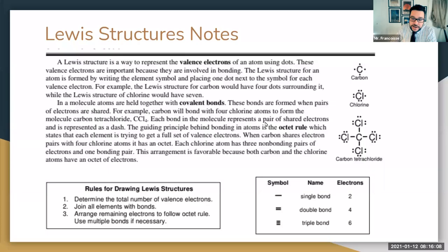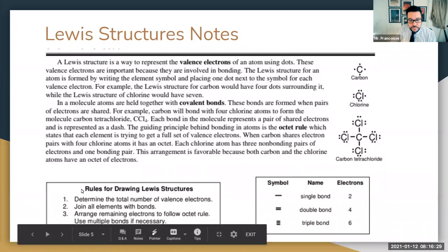The guiding set of principles behind this is what we call the octet rule, which says that each element is trying to get a full set of eight electrons. When an atom shares electrons — for example, carbon shares pairs with four chlorines — it has an octet. We're going to look at three big rules for drawing Lewis structures.